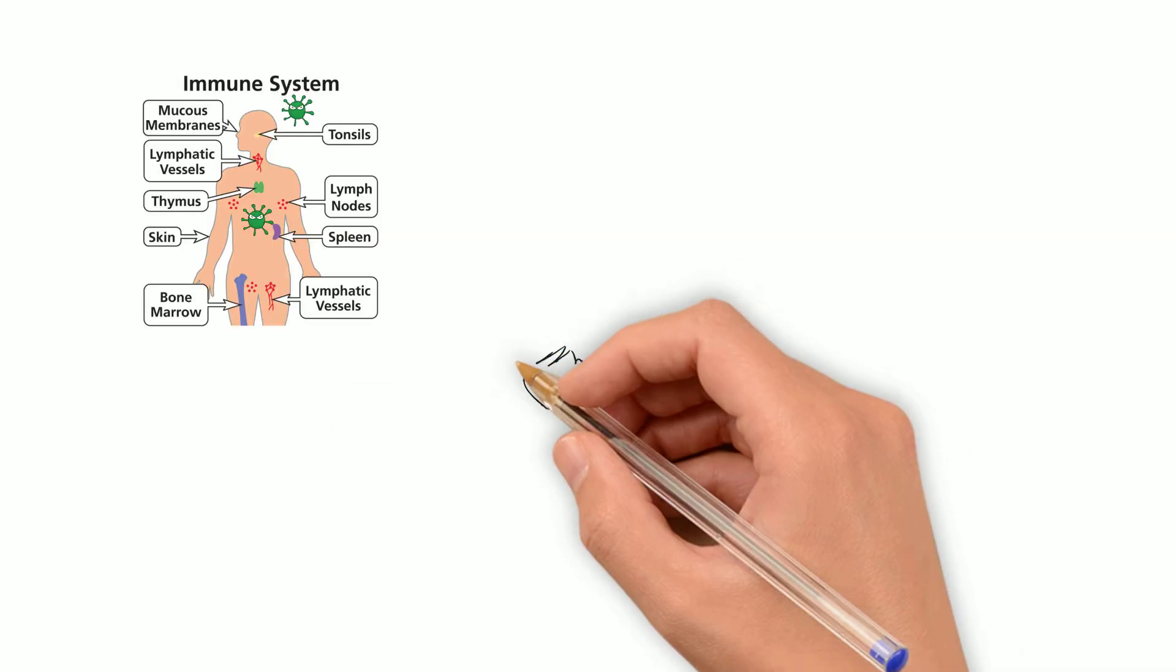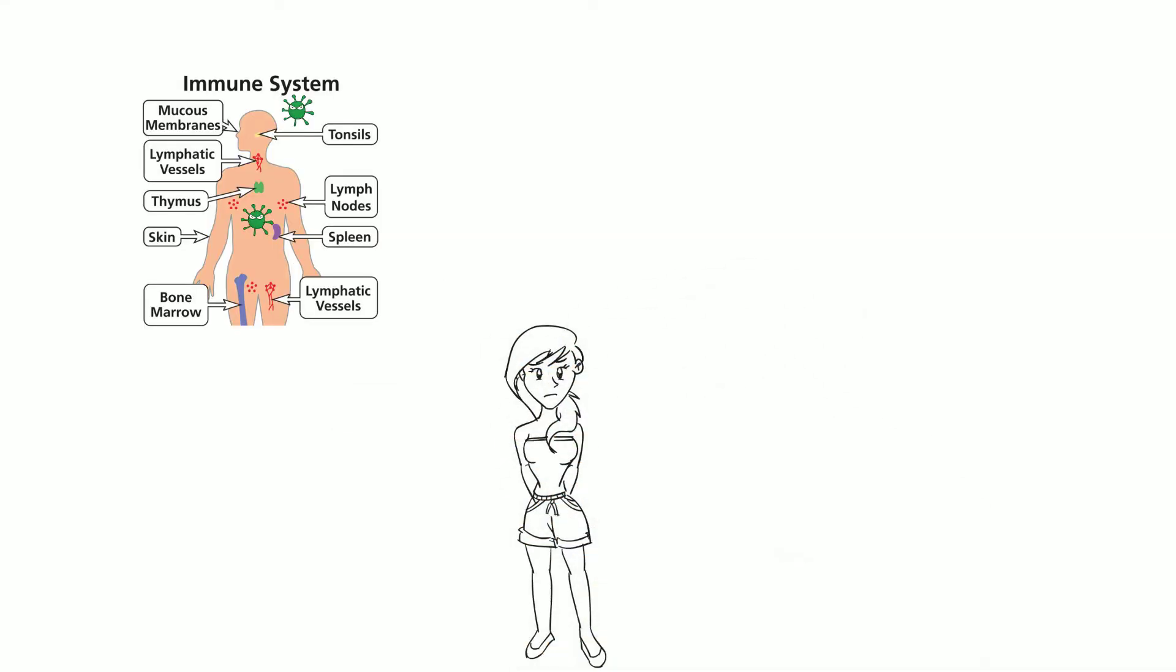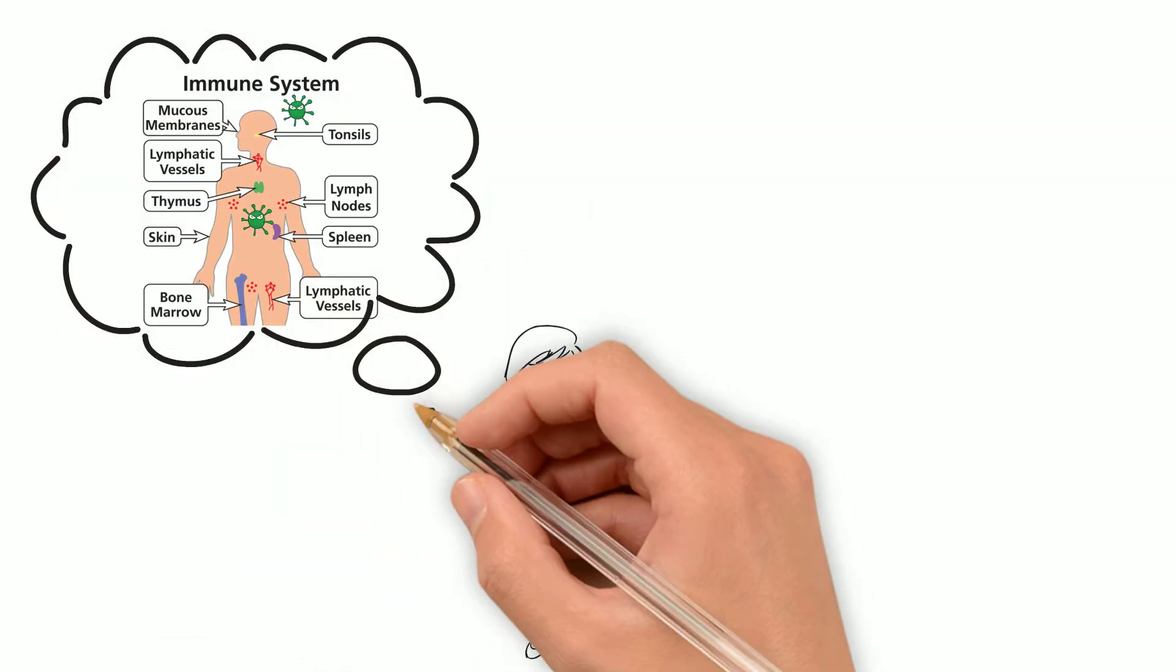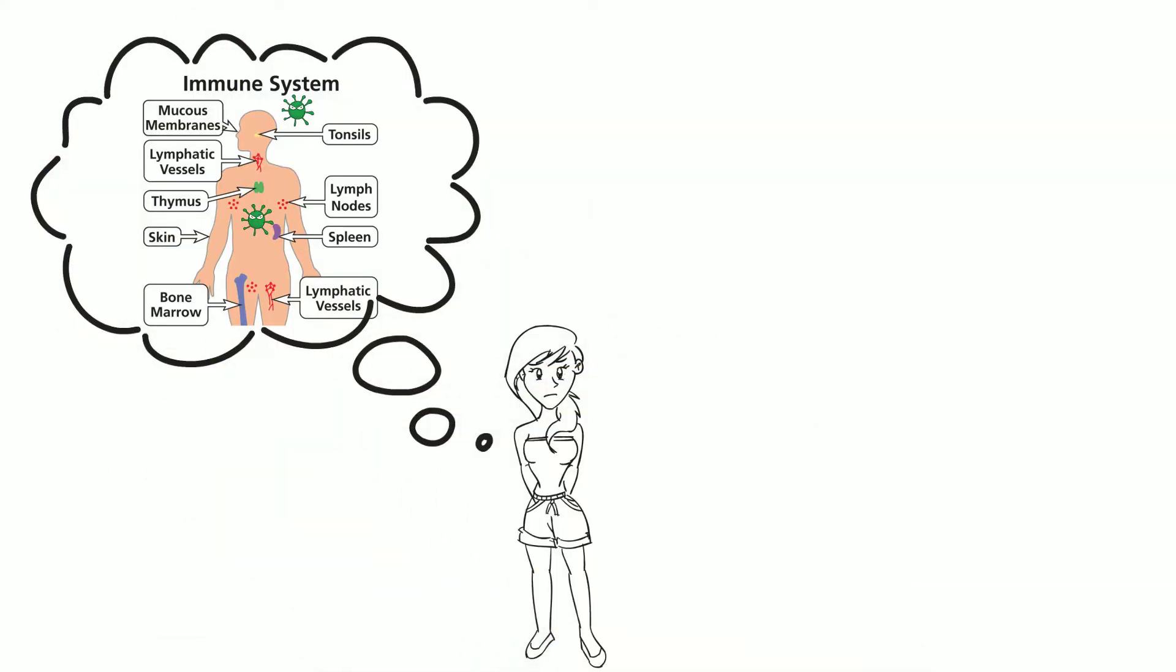The adaptive immune system is a part of your immune system that has a kind of memory. It can remember what pathogens have infected the body before, and it uses this memory to kill the pathogens it remembers more efficiently.